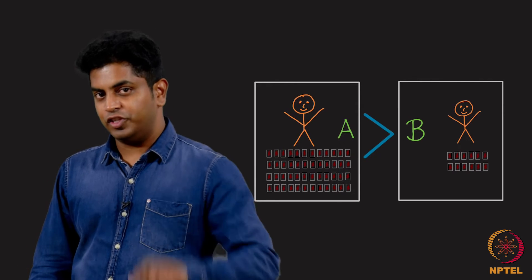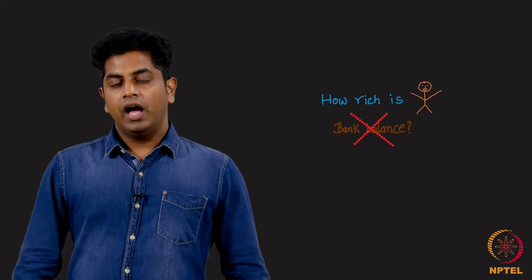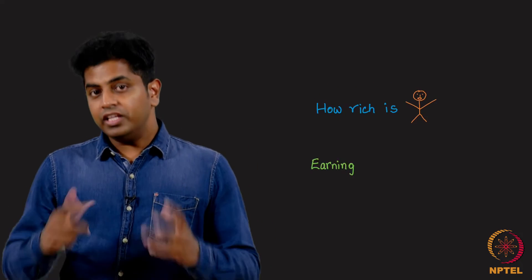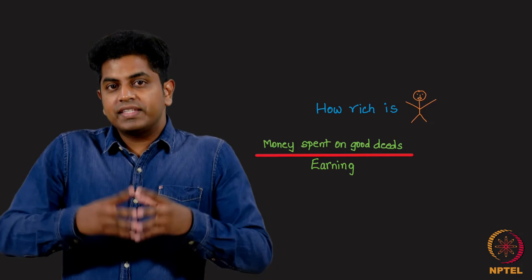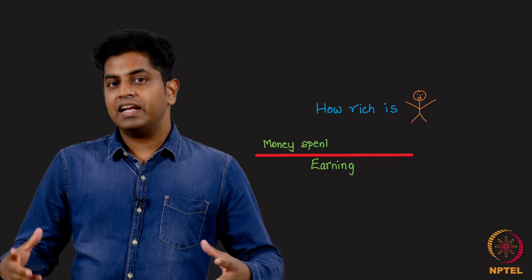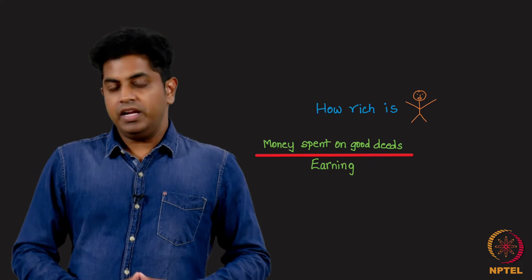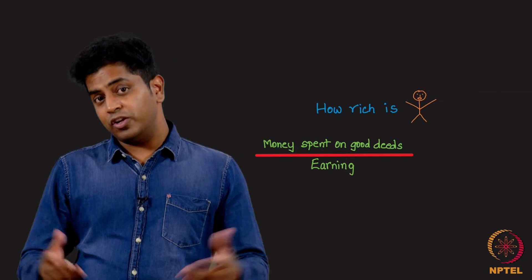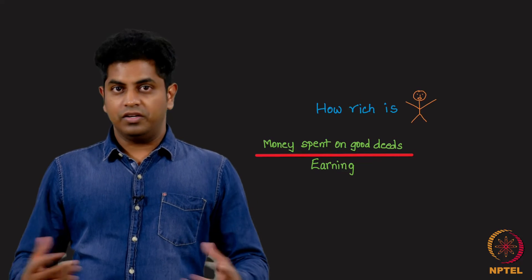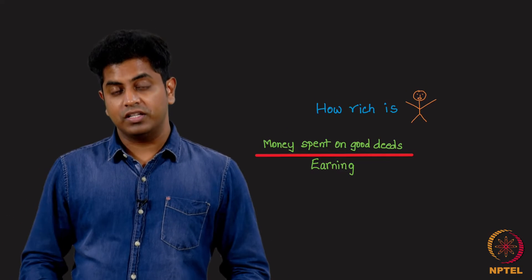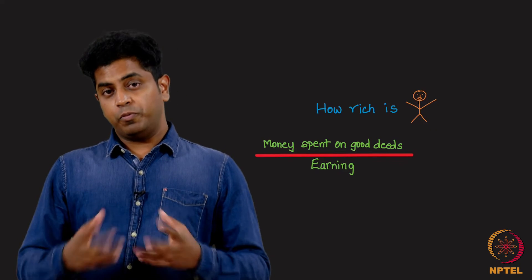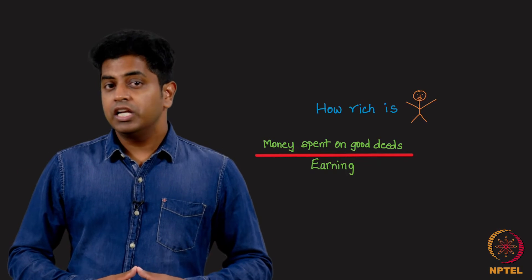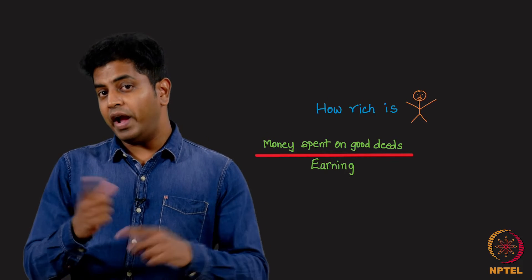I will not judge a person's richness by looking at his bank balance. I will instead look at the following. I will see how much he earns, put that in the denominator, and in the numerator I will put how exactly he spends the money, where exactly he spends the money. If he is spending a good chunk of his money for a noble cause, then I would call that person the richest. So now I am redefining what is rich - the proportion of how well the money is spent divided by how much you earn.